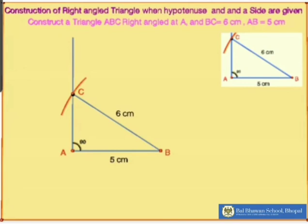So this way we construct a triangle whenever it is RHS criteria. I hope you understood. We will do a few questions related to it in our live class. Thank you.